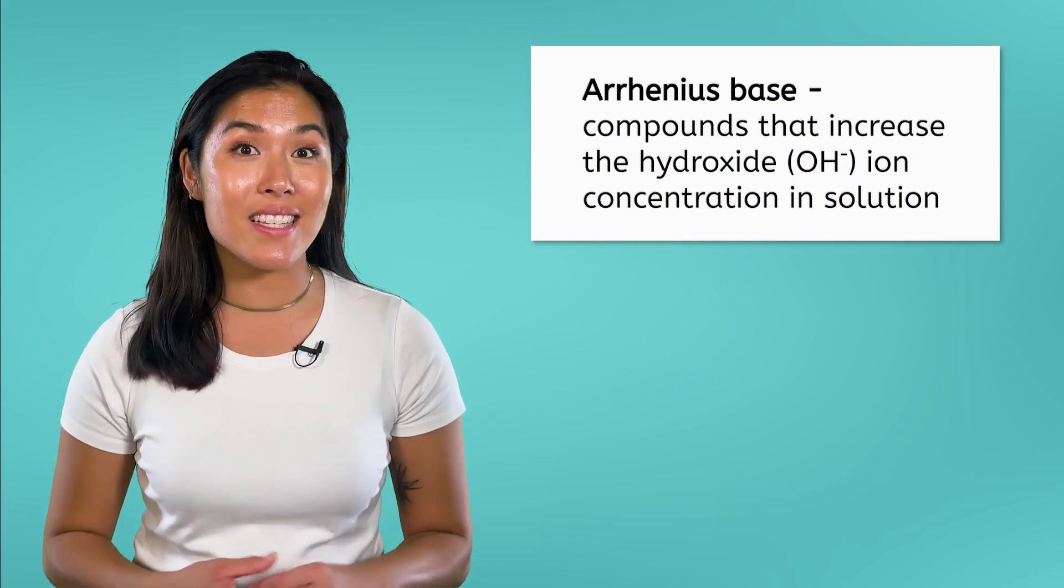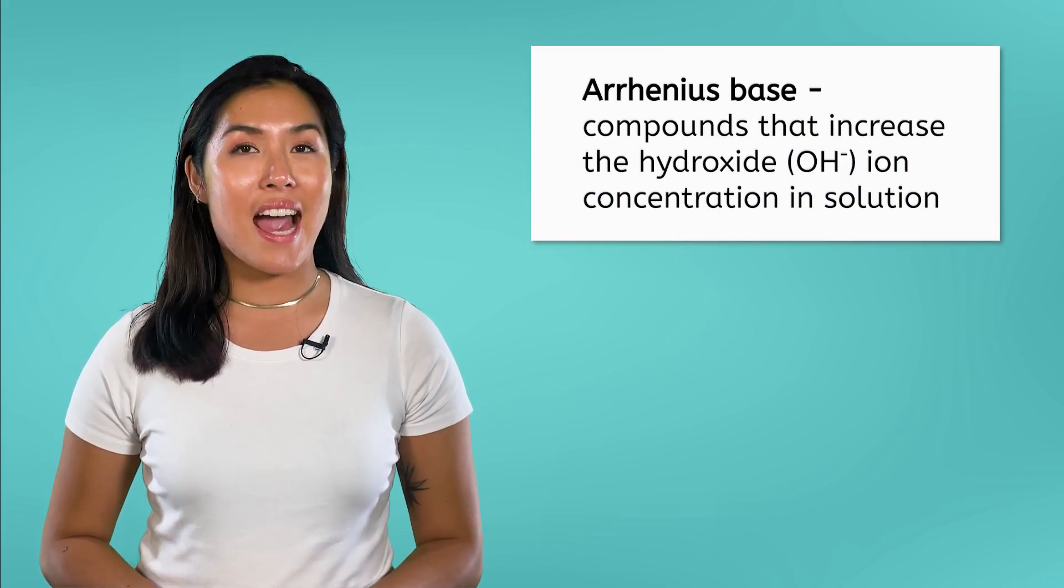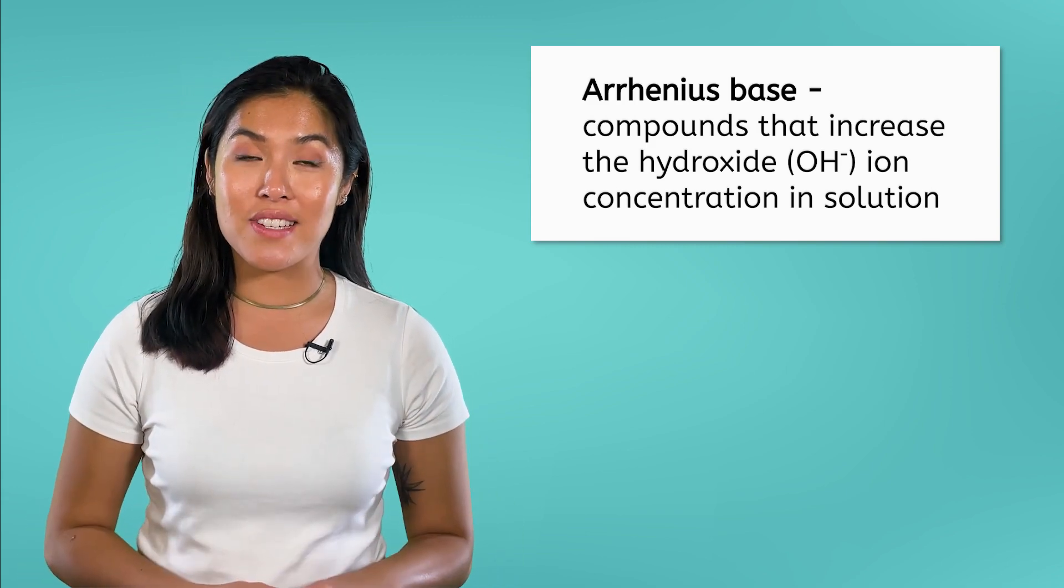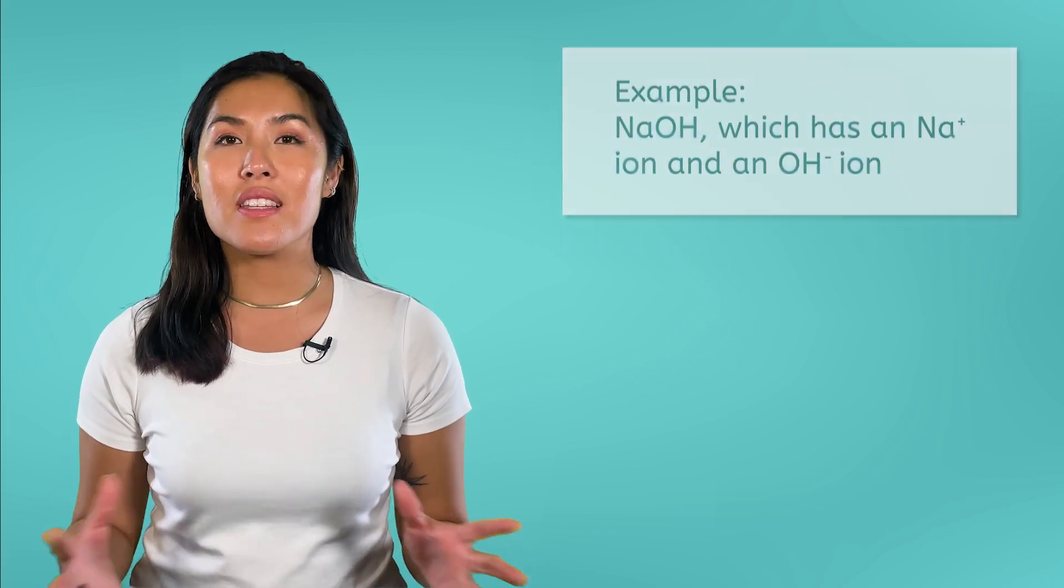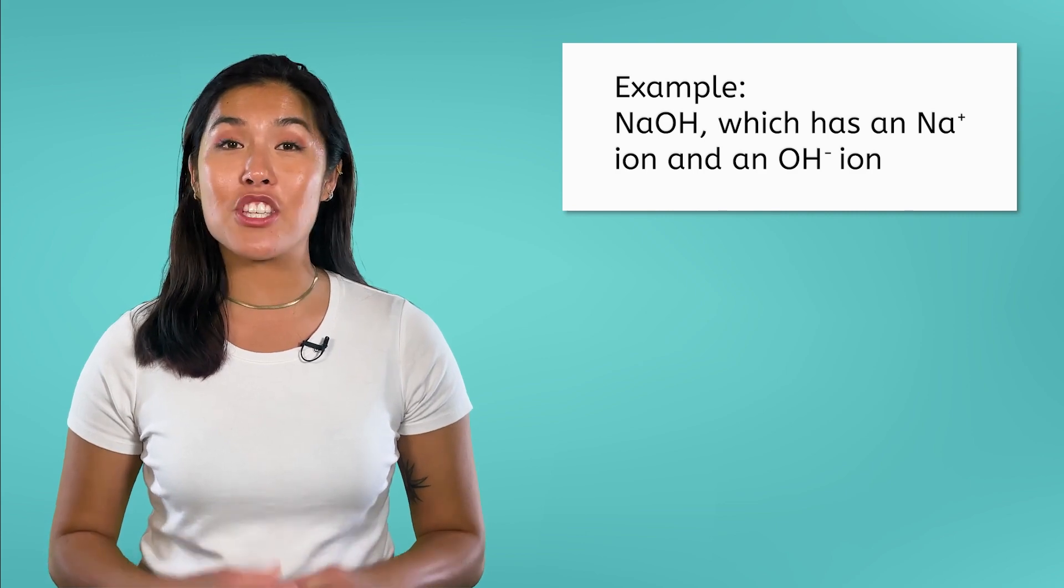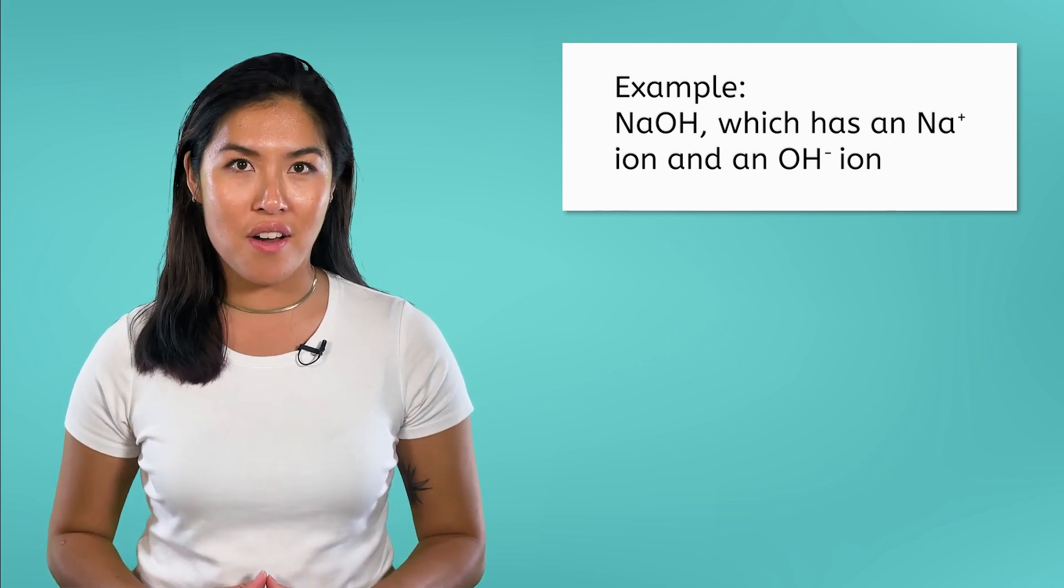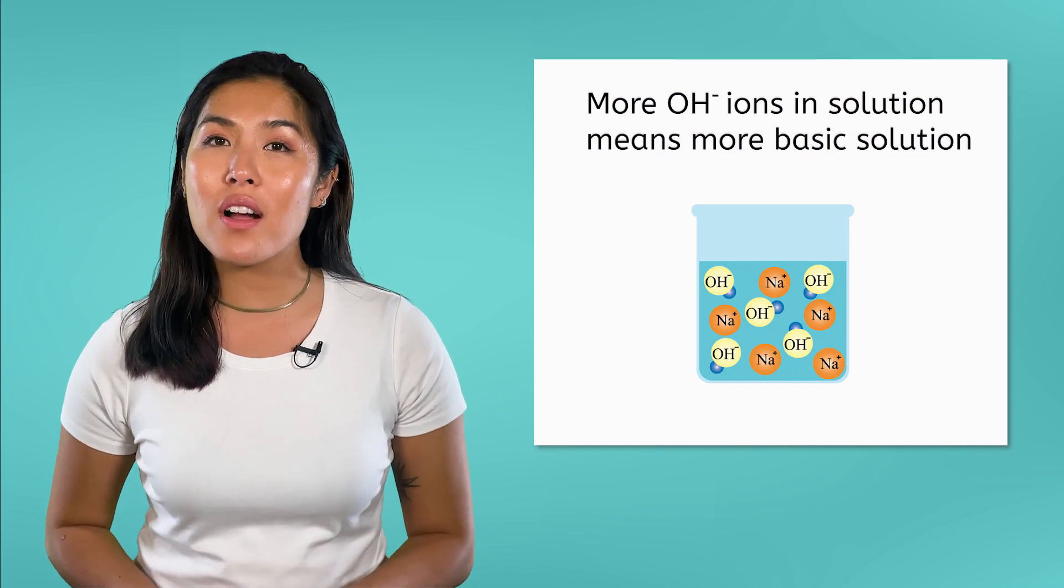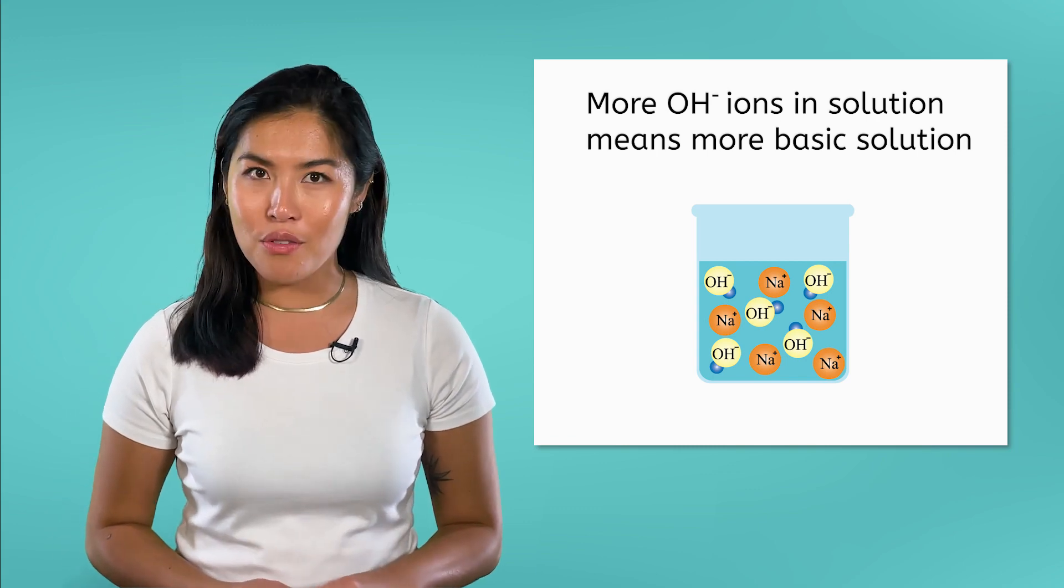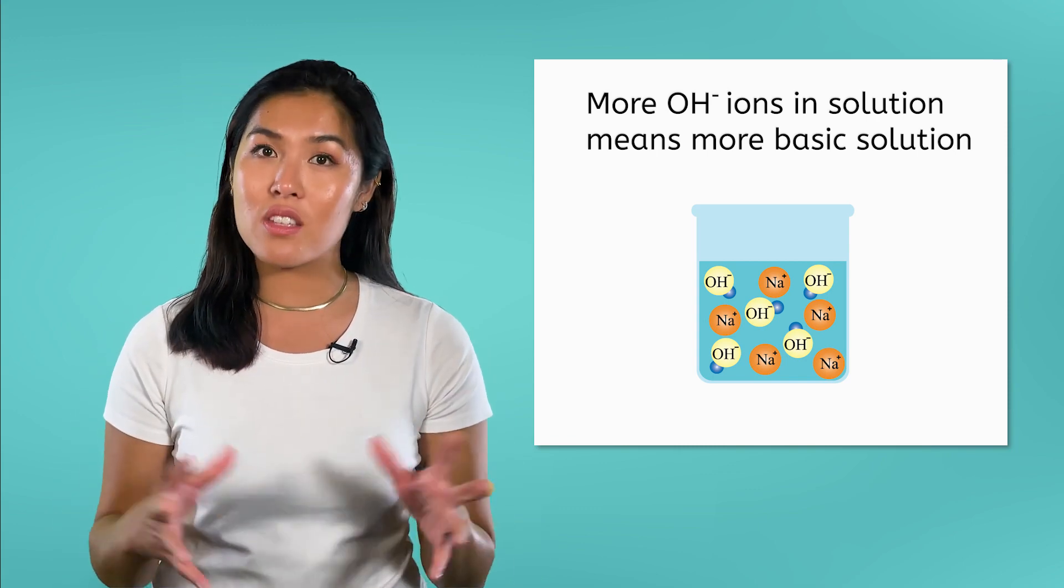Just like when discussing acids, there are a few different definitions of bases. Again, we will focus on the Arrhenius definition of bases that defines bases as compounds that increase the hydroxide ion concentration in a solution. Usually, these compounds are ionic compounds where the negative ion is an OH-1 ion. The more hydroxide ions in the solution, the higher the concentration of hydroxide ions, and therefore, the more basic the solution will be.